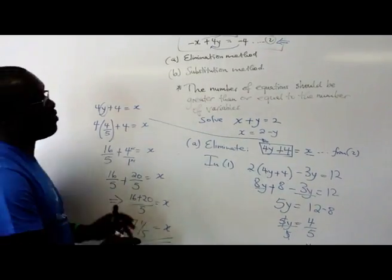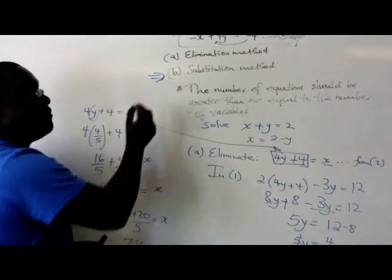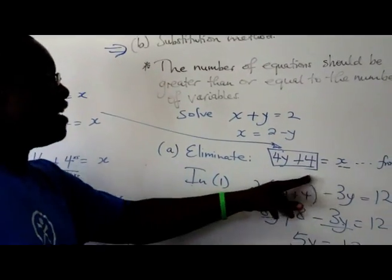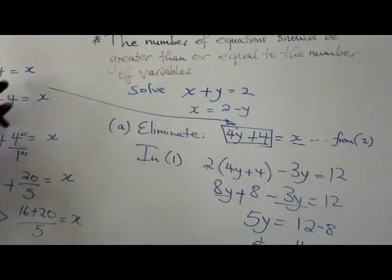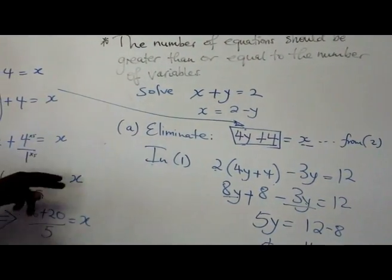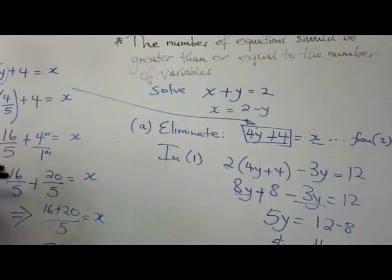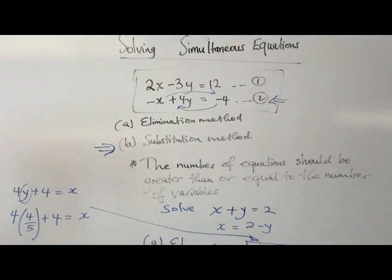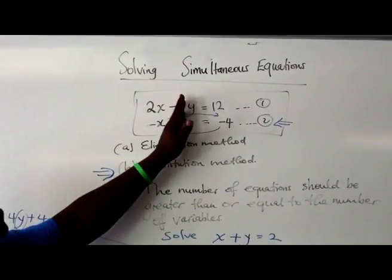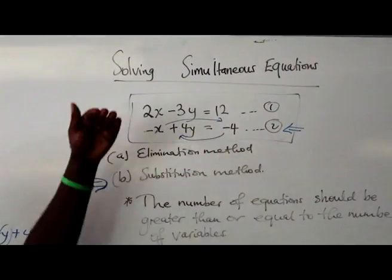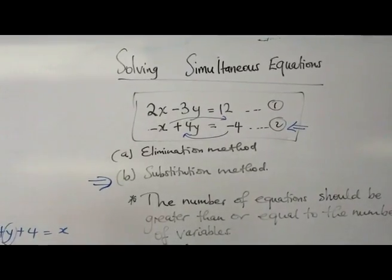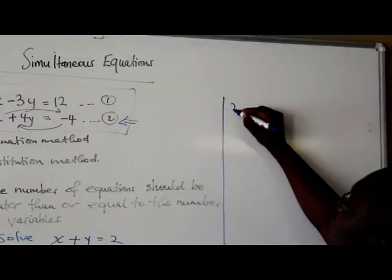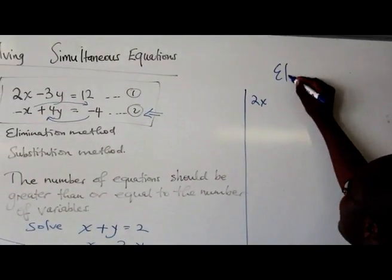So actually, we used the substitution method. This was the substitution method where we said x is the subject of formula and we eliminated using substitution. But now, let's look at the elimination method on its own, where we play around with the coefficients of x and y to eliminate one. So I am going to illustrate that on this part of the board where you have your original equation. Now, this is the elimination method.